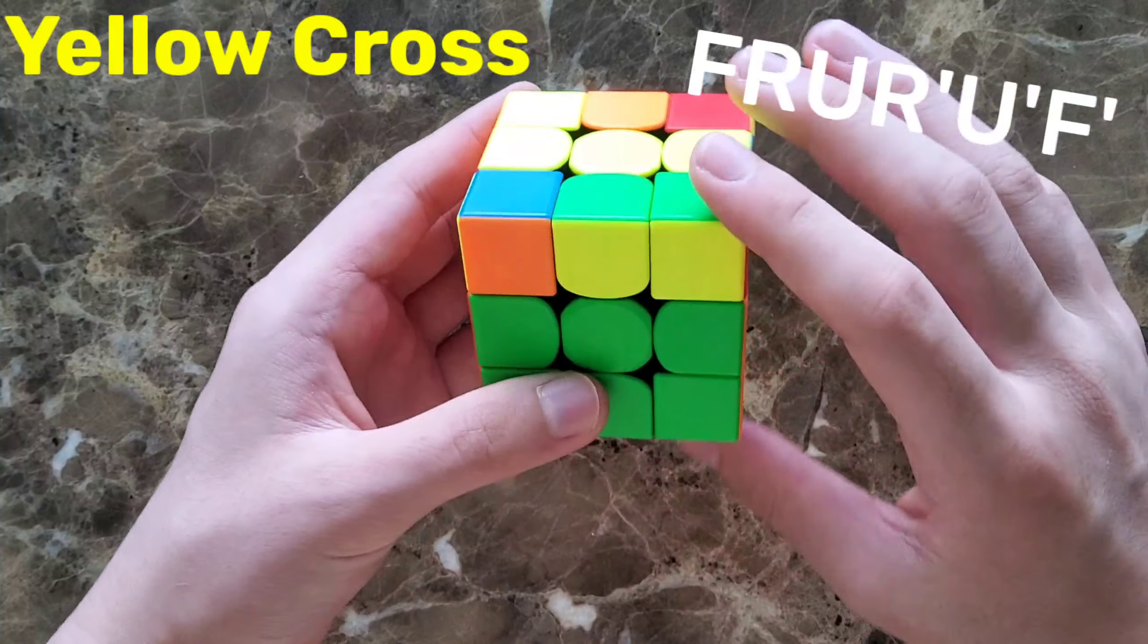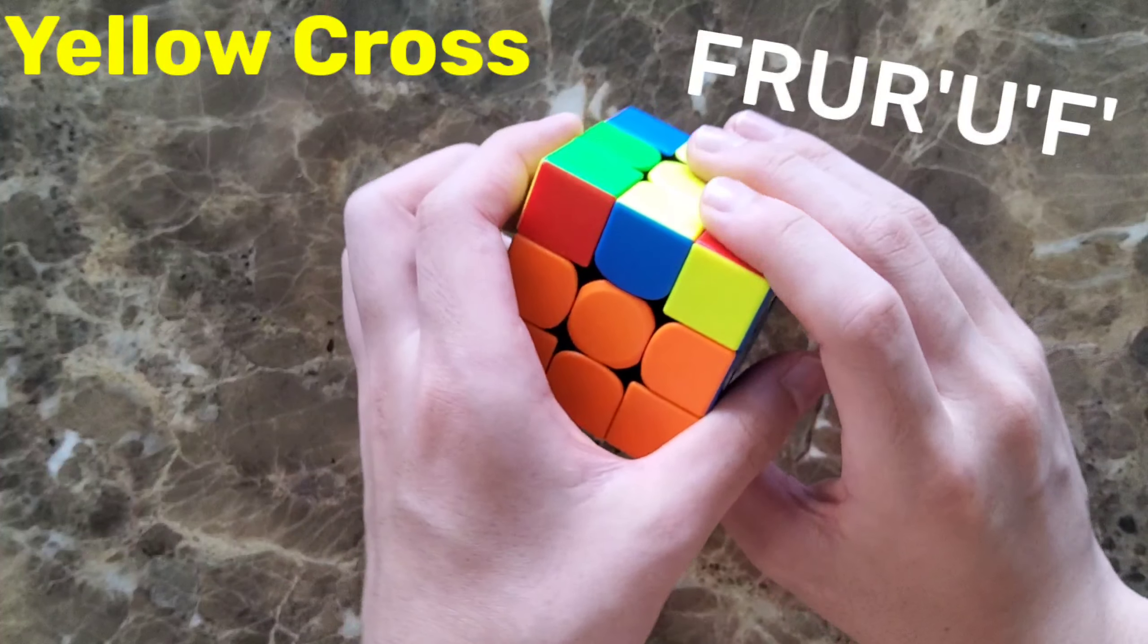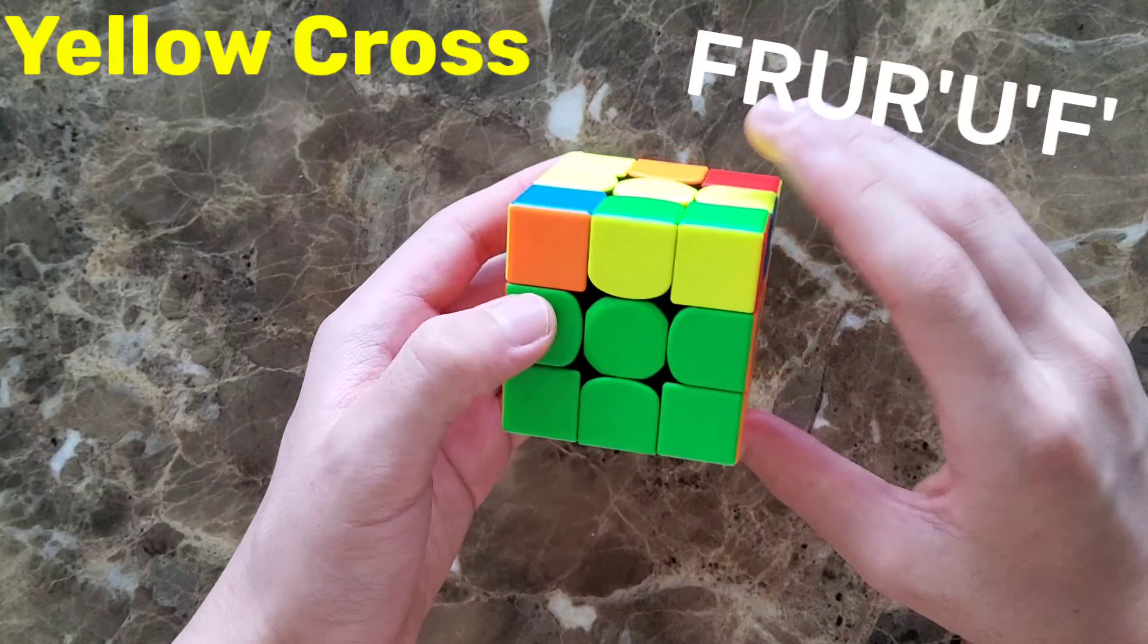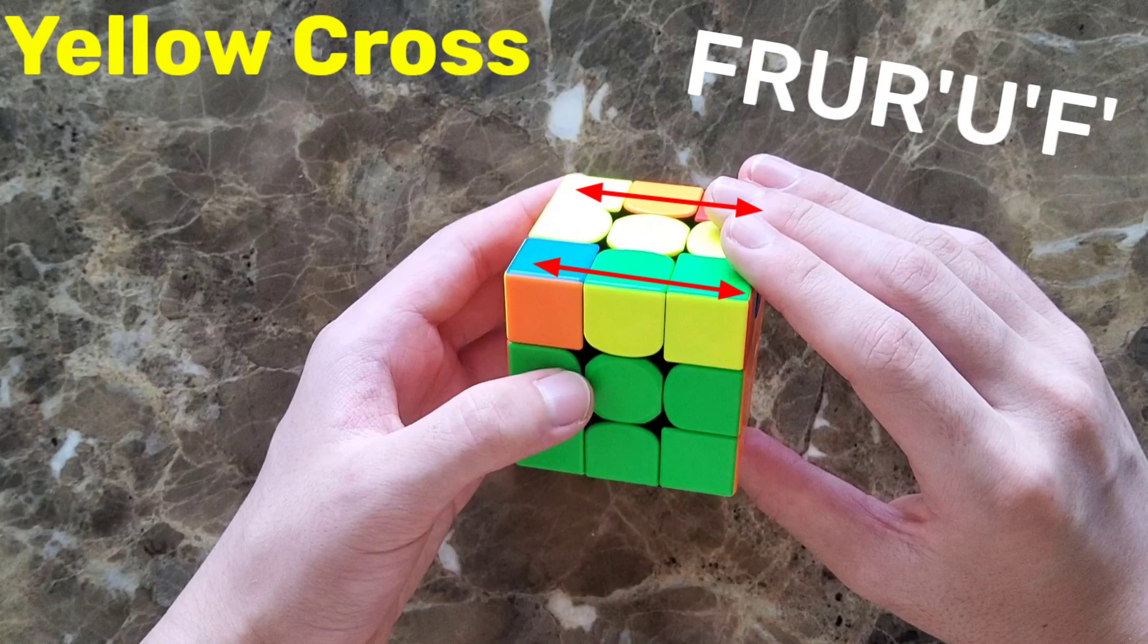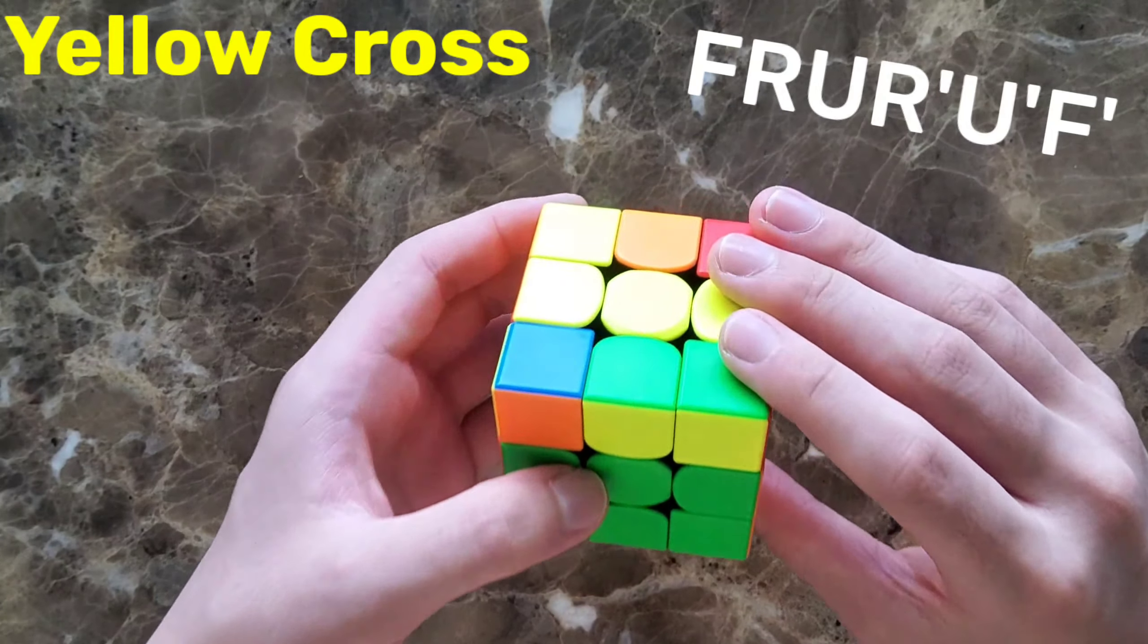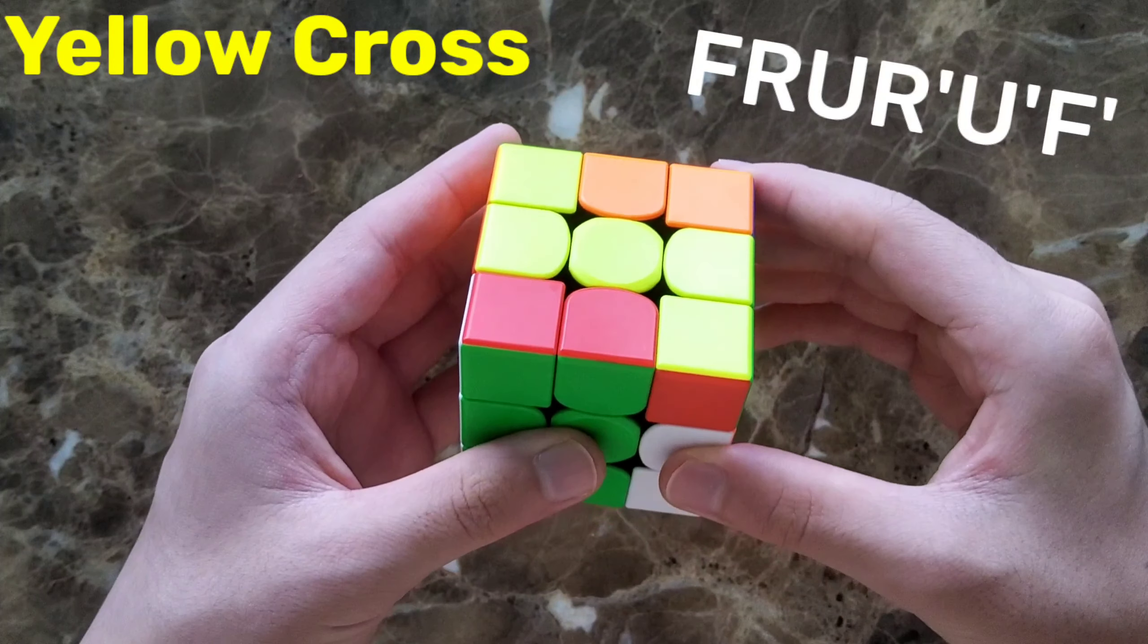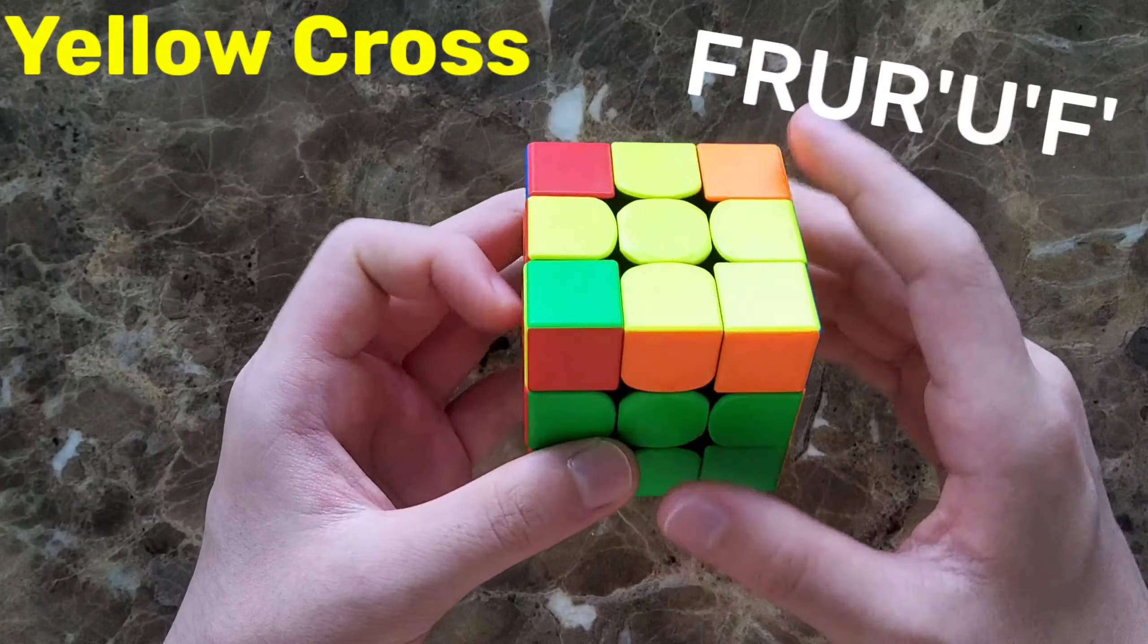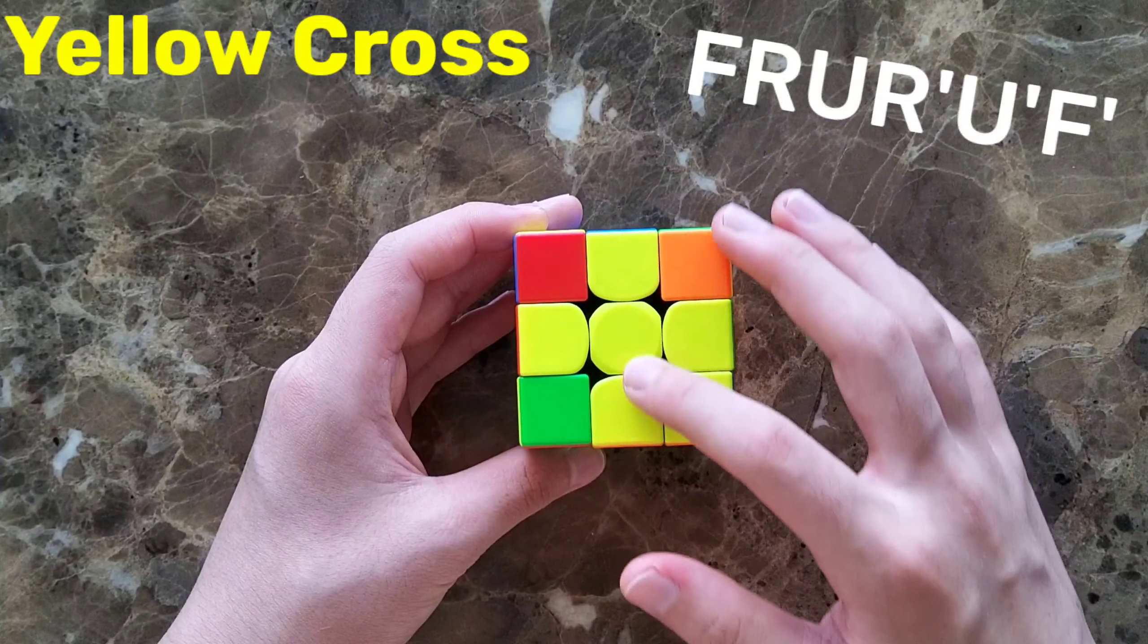And it makes the line. Now you should look here or here. After that, you use the same algorithm as you did before, and then it makes a yellow cross.